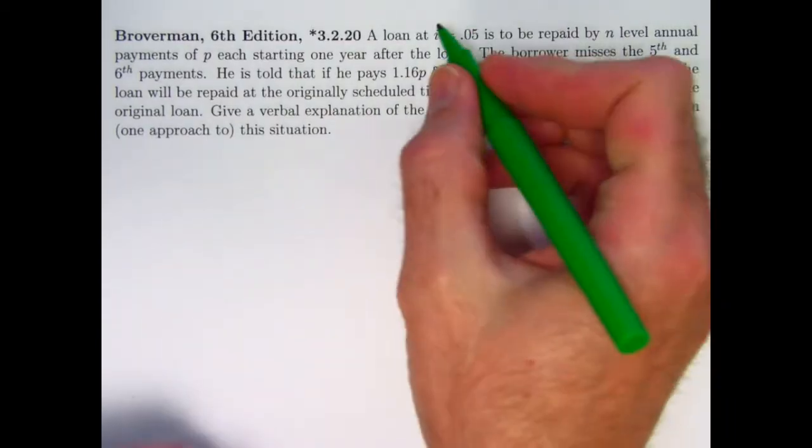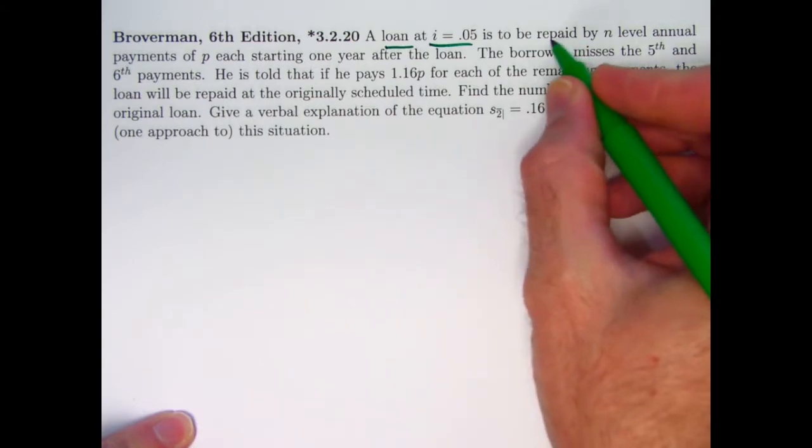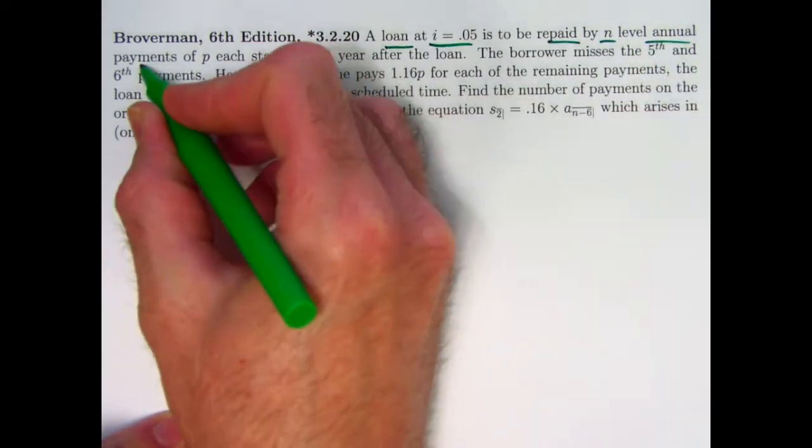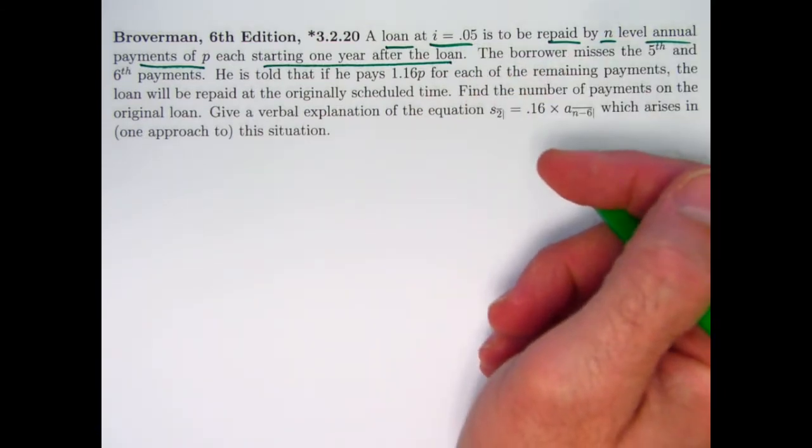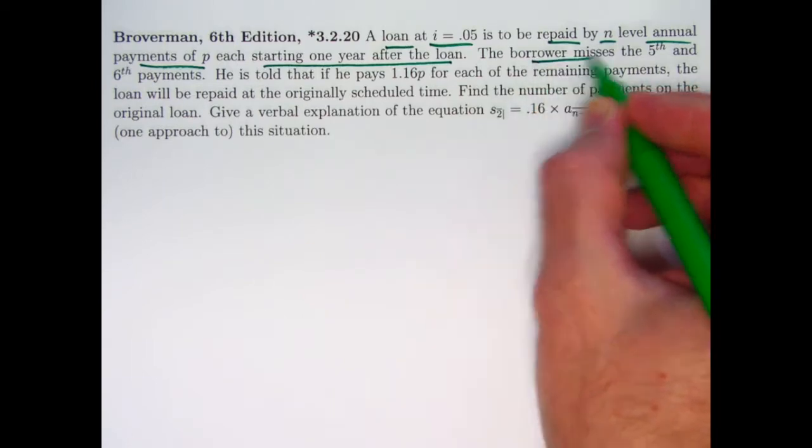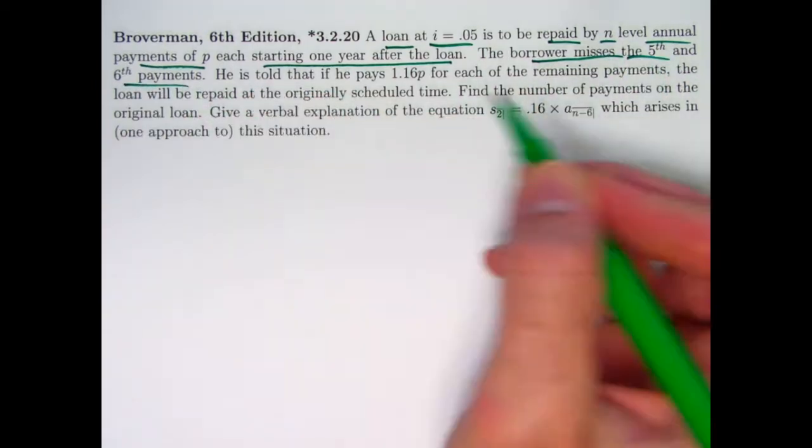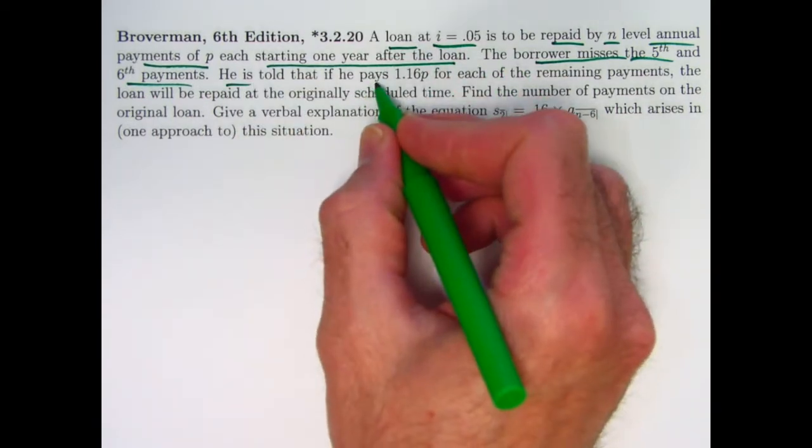Here's the statement. A loan has an interest rate of 5% to be repaid by n-level annual payments of P starting one year after the loan, so evidently i is an effective annual interest rate. The borrower misses the 5th and 6th payments, so he's going to have to make up for that.